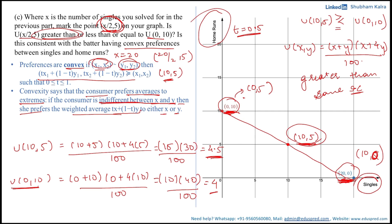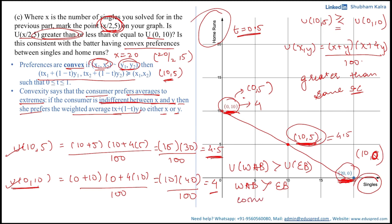The utility at the weighted average bundle 10 comma 5 is 4.5, which is greater than the utility at the extreme bundle 0 comma 10, which is 4. So the utility at the weighted average bundle is greater than the utility at the extreme bundles, meaning the consumer prefers the weighted average bundle to the extreme bundles. Therefore, yes, the preferences are convex. That was all for this video.